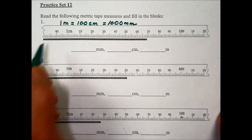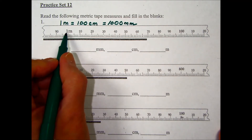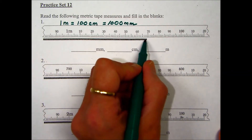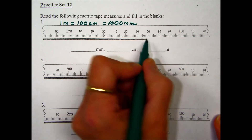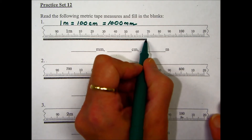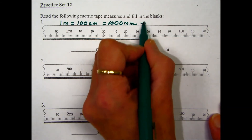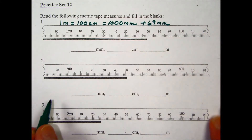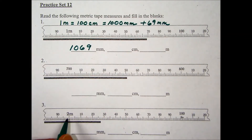We're determining the length of this line. Starting at 1,000 millimeters and adding 10, 20, 30, 40, 50, 60, and a part of the next 10 millimeters. It looks like 9 past the 60, so we add 69 millimeters onto our 1 meter equivalent of 1,000 millimeters, for a total of 1,069 millimeters for this length.